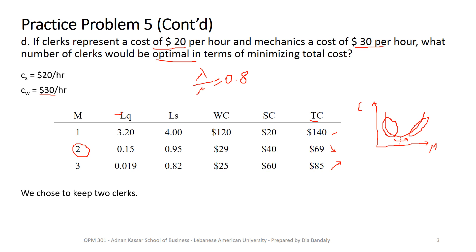We choose to keep 2 clerks, as this is the current condition and also the optimal. I hope you practice these problems on your own and have understood the solutions. If you have any questions, you know how to find me. Thank you.